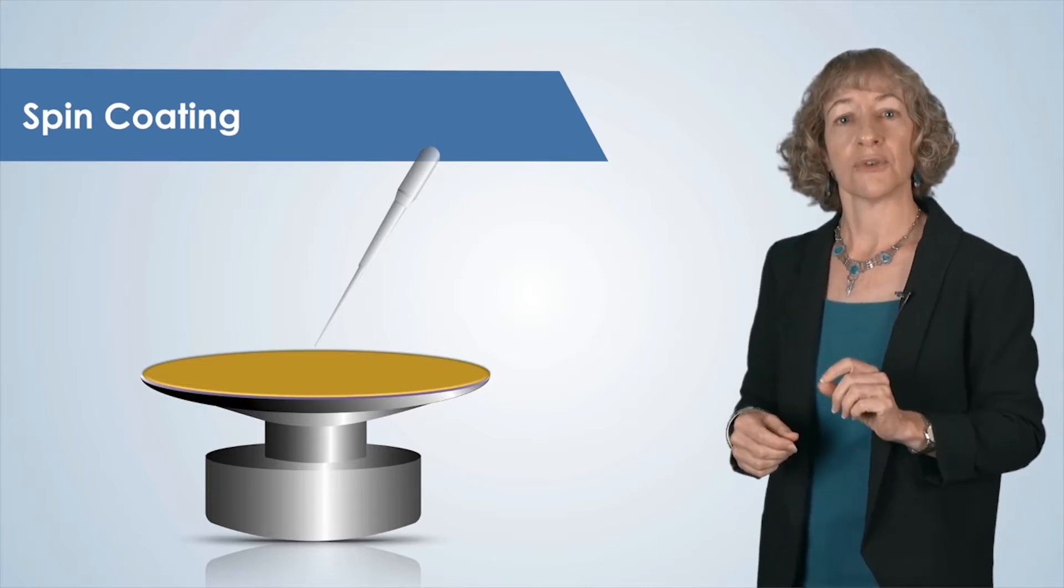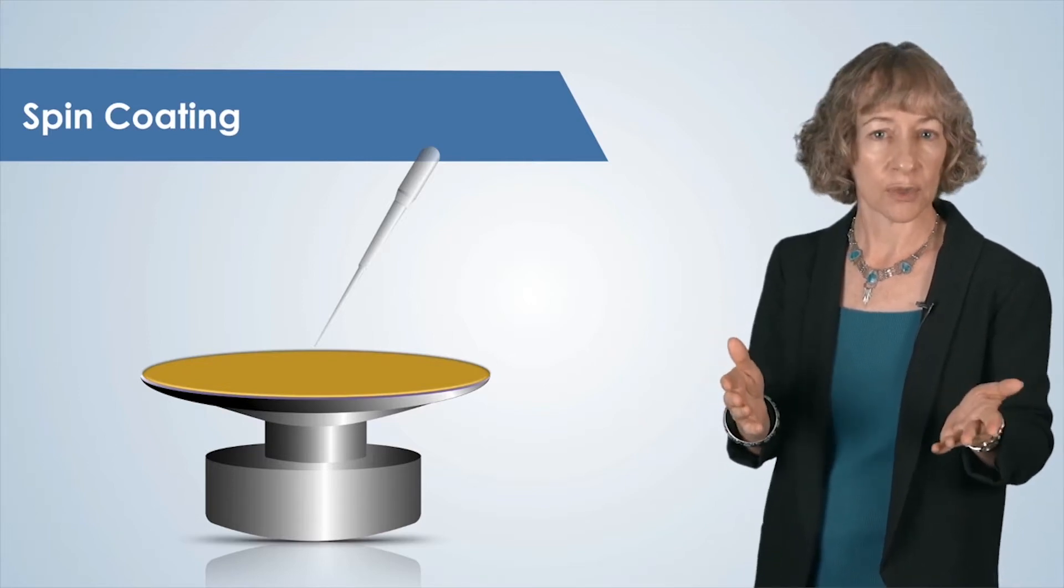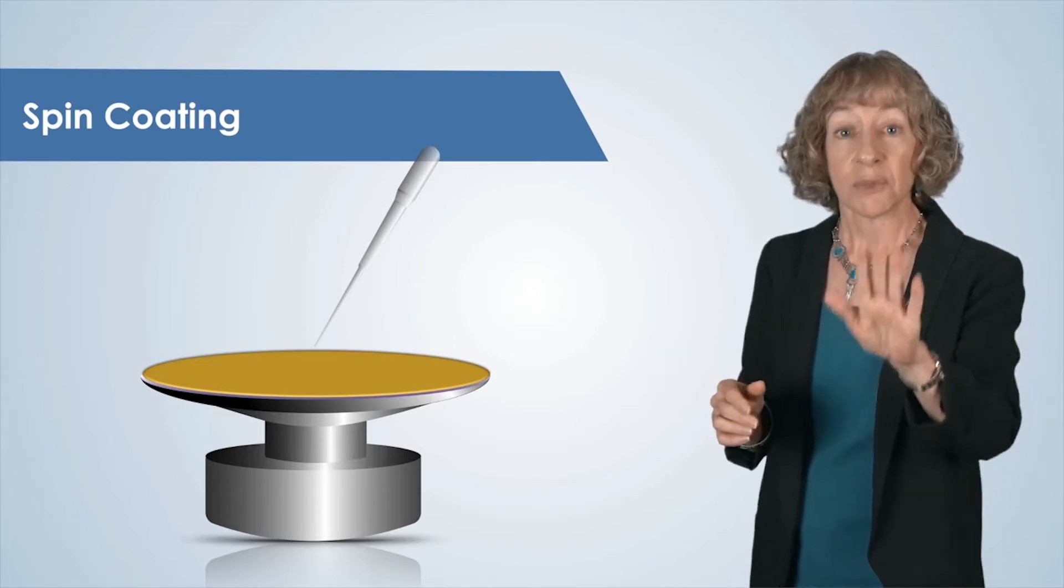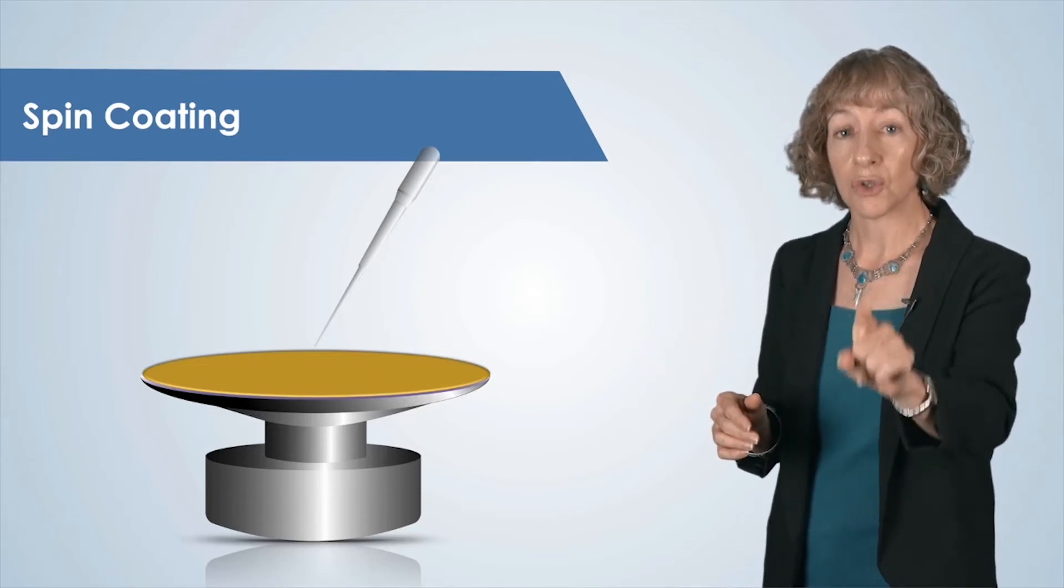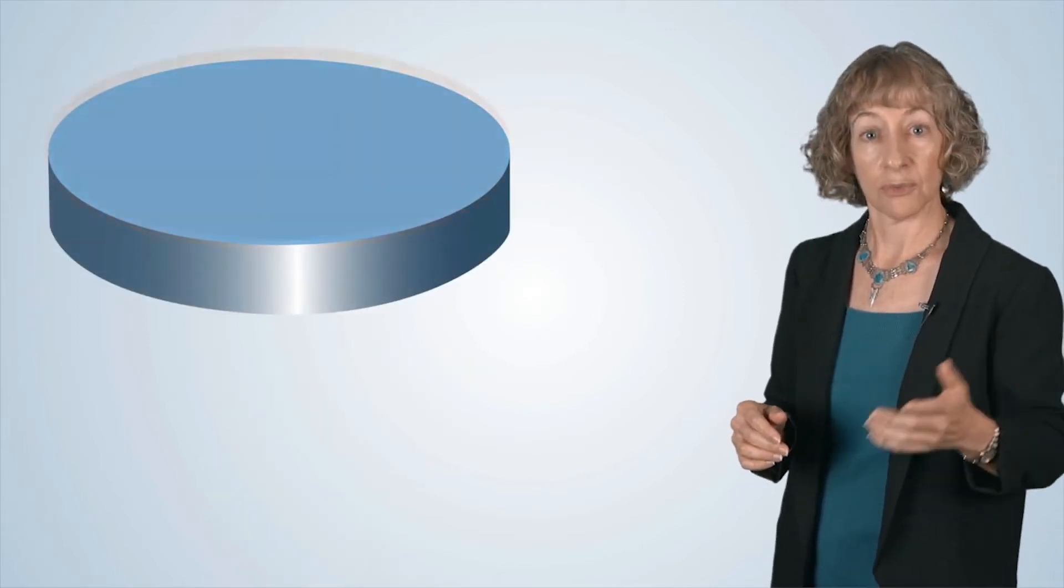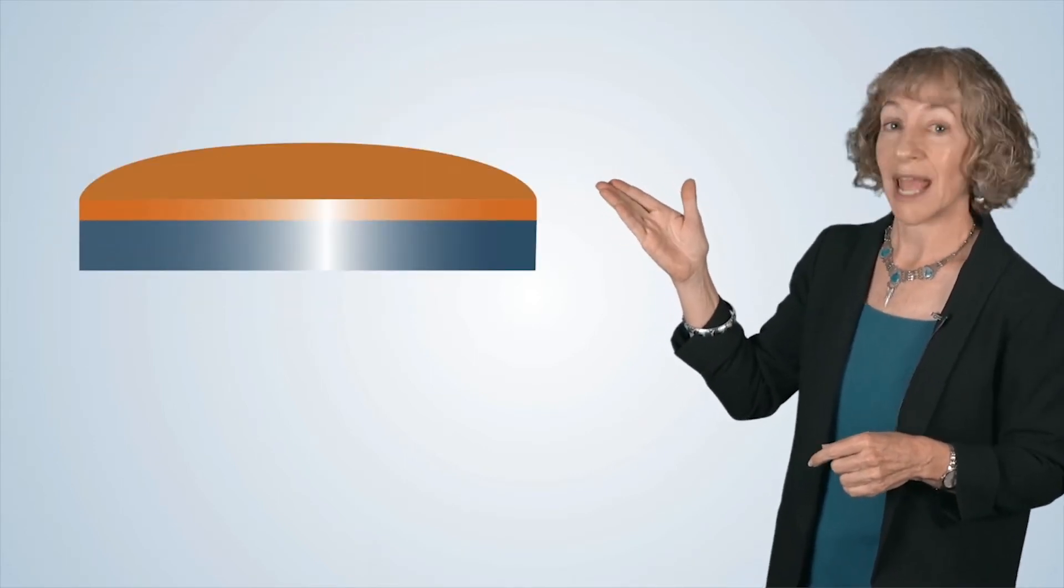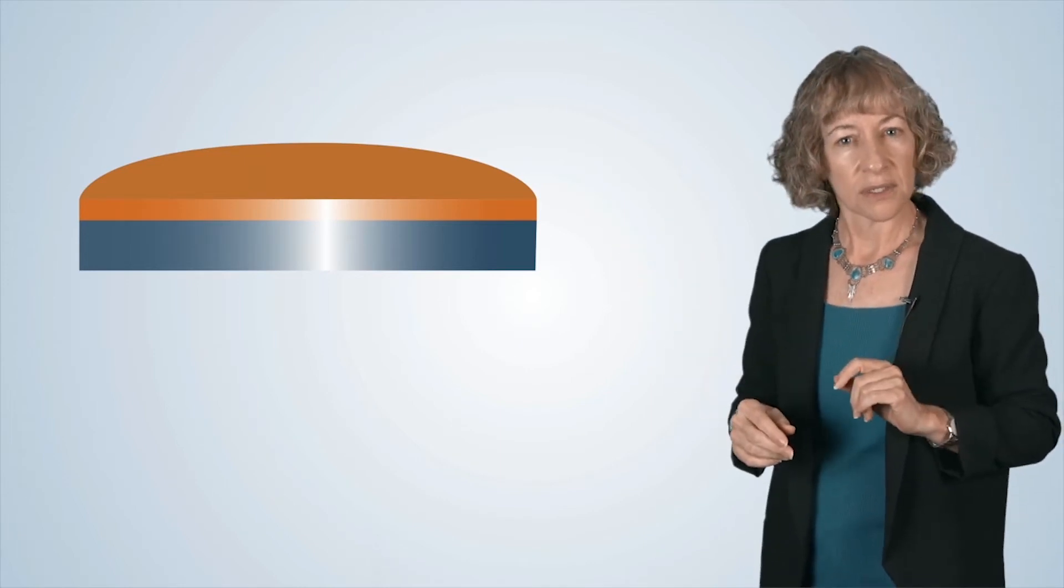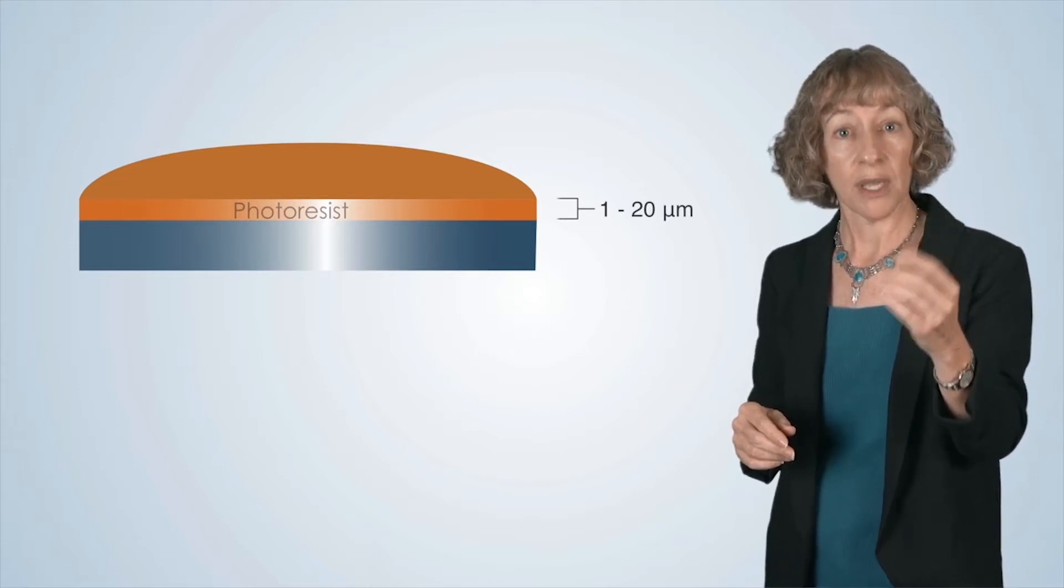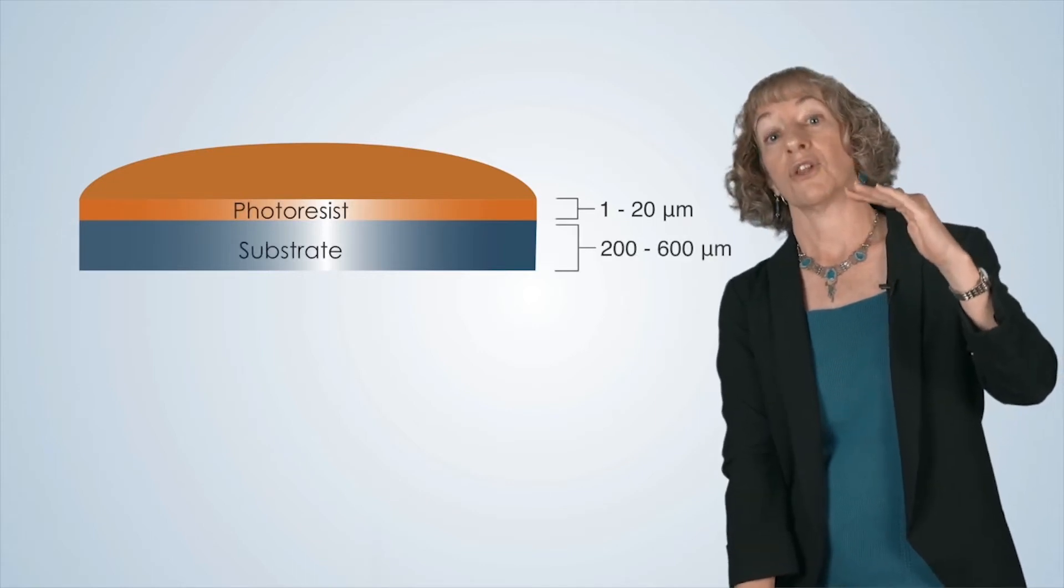The wafer and photoresist coating are then heated on a hot plate for one minute, to a temperature of about 100 degrees Celsius. Note, however, that there are many types of photoresist, and it's important to follow the instructions for your particular photoresist. Now let's take a closer look at the substrate coated with photoresist. Here's a close-up cross-sectional view of the substrate and photoresist. The photoresist thickness may range from a fraction of a micron to 10 or 20 microns or more, depending upon the desired process, while a substrate thickness is usually several hundred microns.